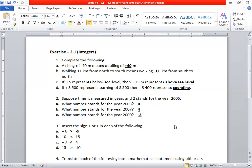If minus 15 represents below sea level, then plus 25 represents above sea level. If plus 500 represents earning of $500, then minus 500 represents spending.